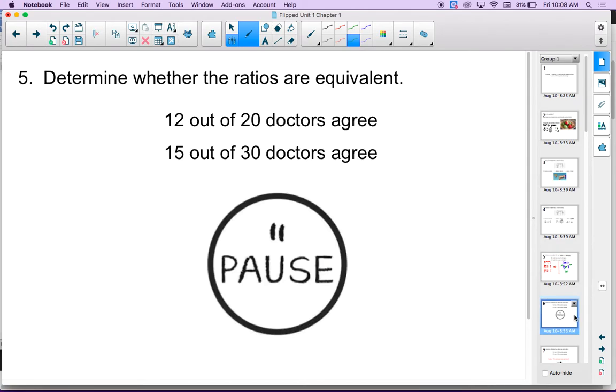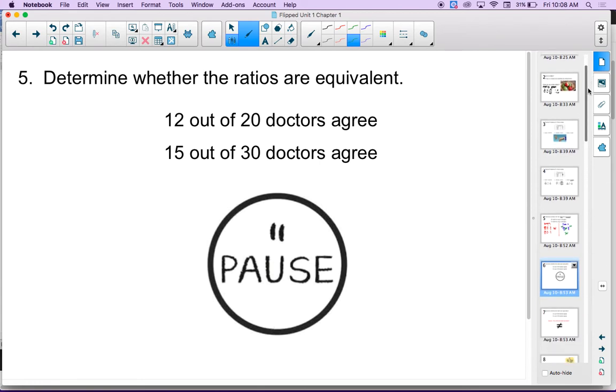Go ahead and take a look at number 5. Now, you can choose whichever method you'd like to do number 5 with. You can do it with the simplify method or with the cross-multiply method. But I do want you to press pause and I want you to do this question and check your answer when you are finished. Press pause now.